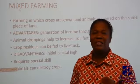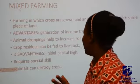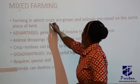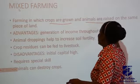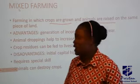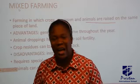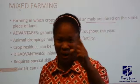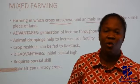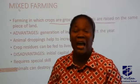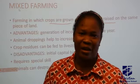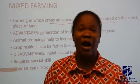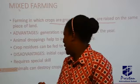The next one is mixed farming. What is mixed farming? Mixed farming is farming in which crops are grown and animals are raised on the same piece of land. So unlike sole farming where you do just one, in mixed farming you have crops and animals together — you are raising animals and at the same time you are cropping.